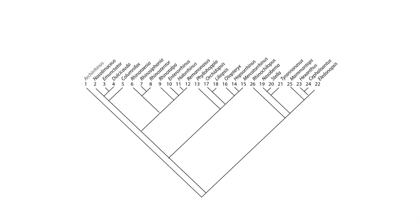A cladogram is a branching diagram which depicts the relationships between organisms. Organisms that share the same branch are more closely related to each other, as evidenced by similarities. These similarities can be morphological, behavioral, or molecular, such as similarity of the DNA structure in the organisms.